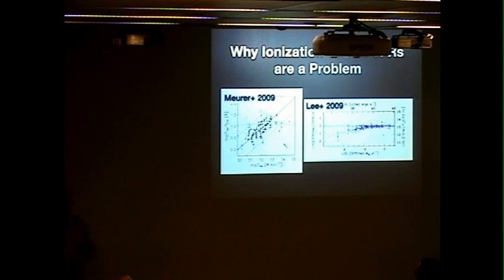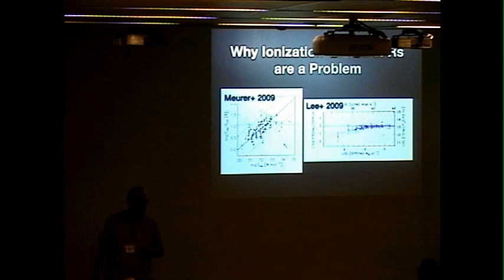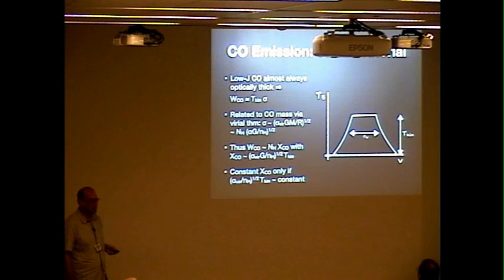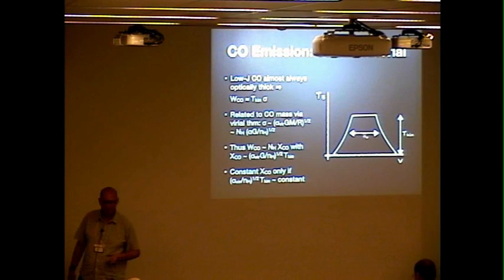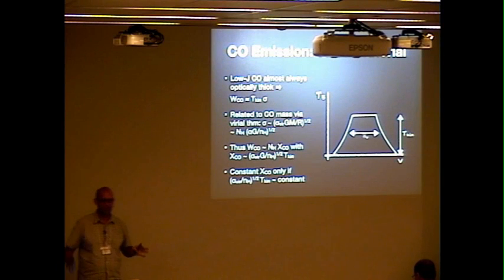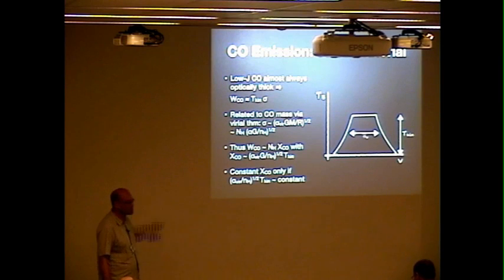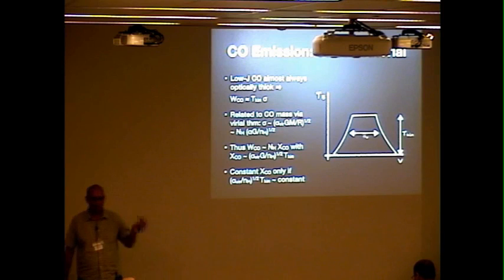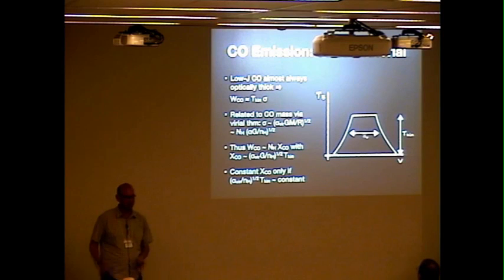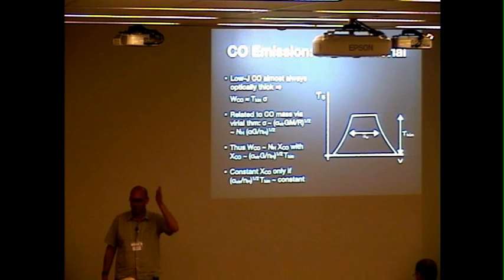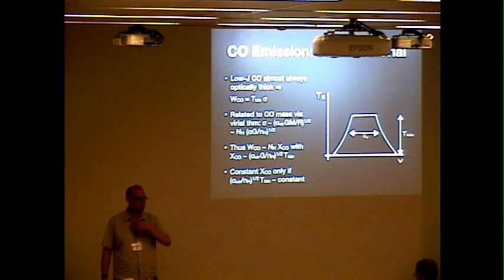I am going to attempt to allay your fears regarding some of these plots. Let's start with the CO line emission. Here's my 30-second tutorial in what a CO line is actually getting you. Why is CO a good proxy for molecular gas? The key idea is that low-J CO is almost always optically thick. What that means is that if you look at line center, you're staring at a brick wall — you just get to see the surfaces of the molecular clouds, not through them.